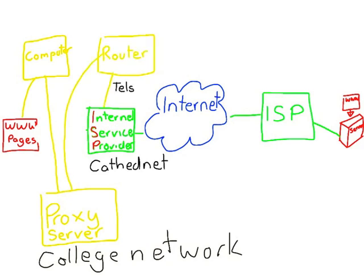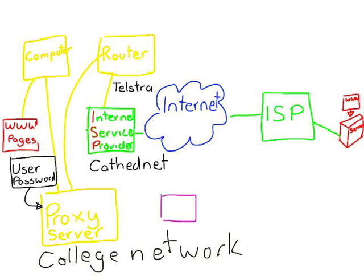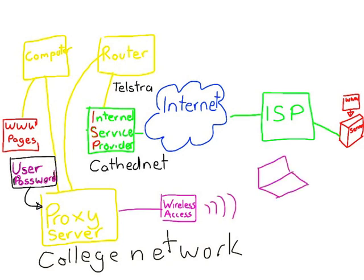That connects to a router, which connects you through to our internet service provider. The proxy server is the only computer on the internet. You need to put your username and password to be able to be on the internet yourself. Now at school, we also have a wireless network, and the wireless access points connect to the proxy server also.